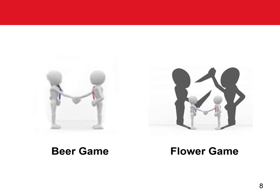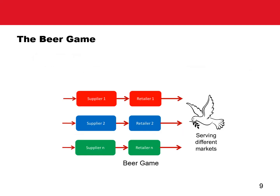The beer game is widely used to teach supply chain coordination and the value of information. However, the beer game largely ignores the conflict of interest among the supply chain partners, and thus likely paints a picture of supply chain coordination too rosy. The difference between the beer game and the flower game can be illustrated by these two pictures: the beer game focuses on information sharing and order quantity coordination — that is, the handshake. The flower game combines the handshake in the front with stabbing in the back. Specifically, the beer game includes only order quantities, but not price transactions among the trading partners.